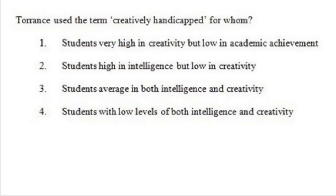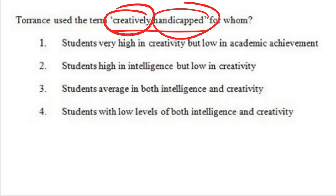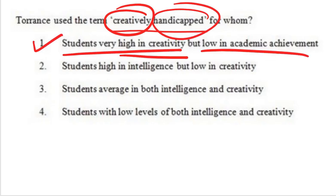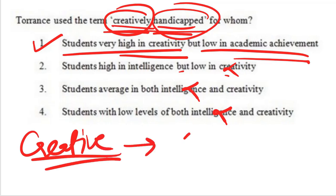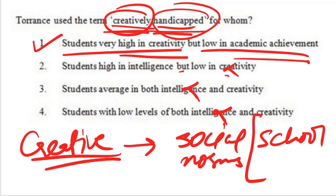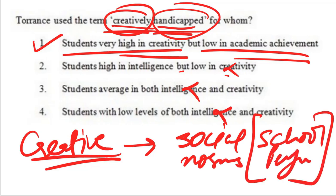Torrance used the term 'creatively handicapped' for whom? Students who are high in creativity but low in academic achievement. They are highly creative but handicapped by society's norms — you are expected to perform academically in school, and even though they are highly creative, they are not able to achieve academically. So they are creatively handicapped.